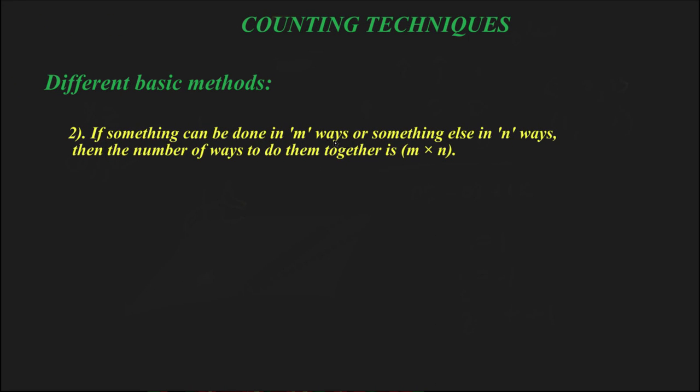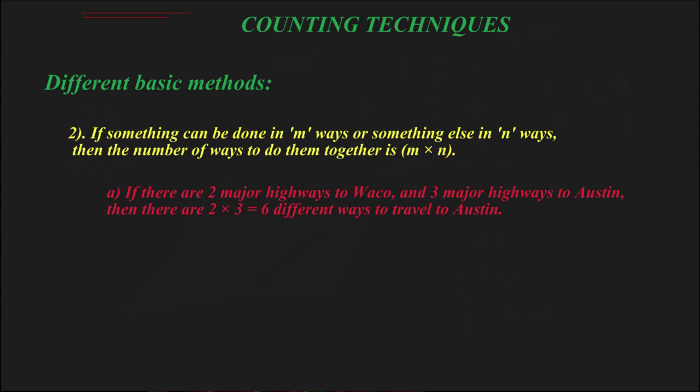Something that could be done in m number of ways, and something else that could be done in n number of ways. To do them together, you would have m times n possible options. A quick example is the best way to illustrate this.